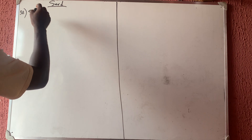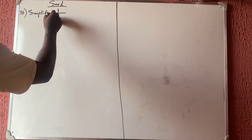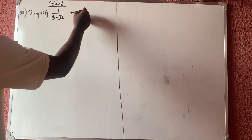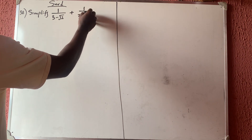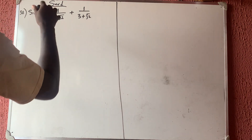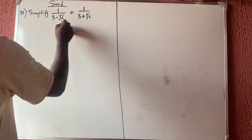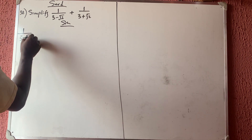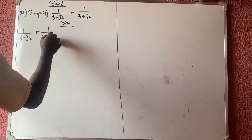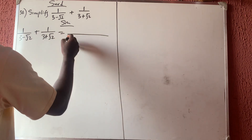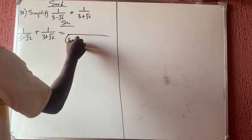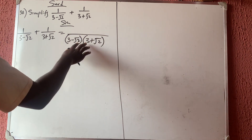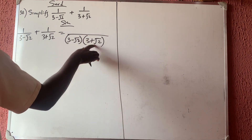The question says: simplify 1 over (3 minus √2) plus 1 over (3 plus √2). Whenever you have anything in fraction, the first thing that comes to mind is the normal way of solving fractions. The LCM of the two denominators is simply (3 minus √2) times (3 plus √2).